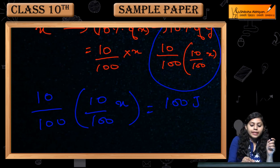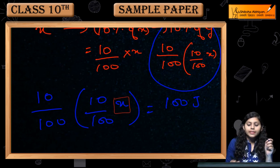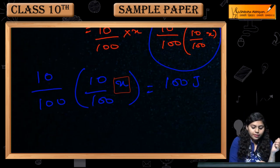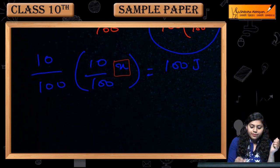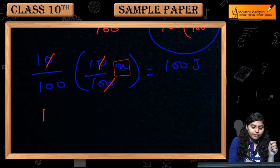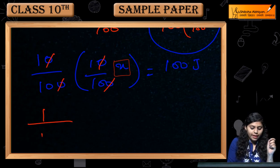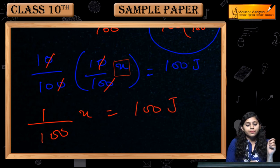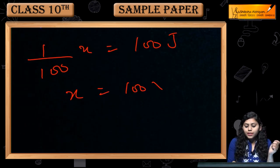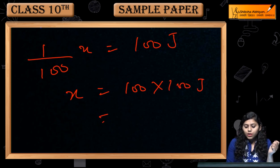Ab humein batana hai that ye jo X hai, ye producers ke paas energy hai. Iski value batani hai. This would be 1 by 100 X is equals to 100 joules. X is equals to 100 into 100 joules.